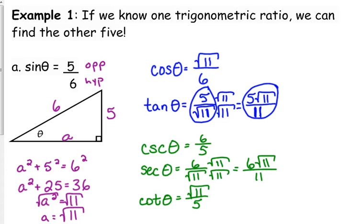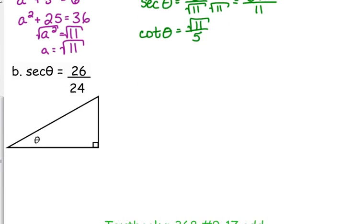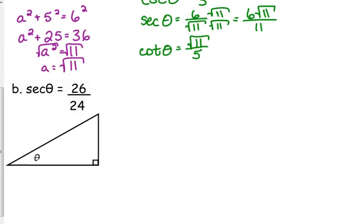And those are the other five trig ratios, just based on the information that they told us about sine. We could find those other five. All right, let's look at b. b is the secant of the angle is equal to 26 over 24.